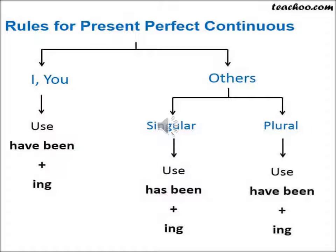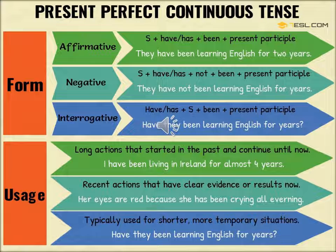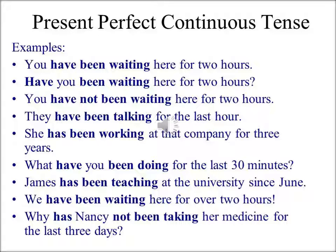In this slide, various examples of affirmative, negative, and interrogative sentences are given, along with the usage of Present Perfect Continuous Tense. Kindly go through all these examples very carefully and observe the structure in each of the different types of sentences. A few more examples are given for different types of sentences — kindly go through these for your better understanding.